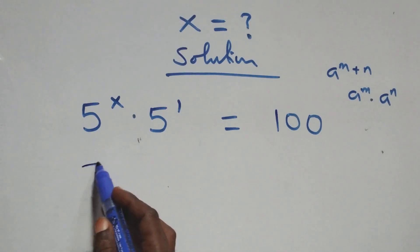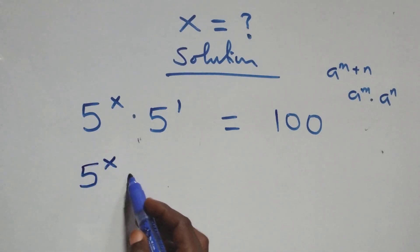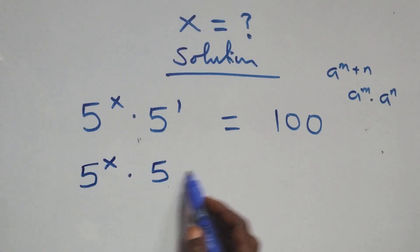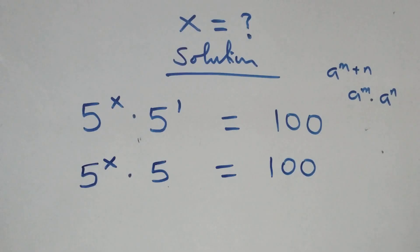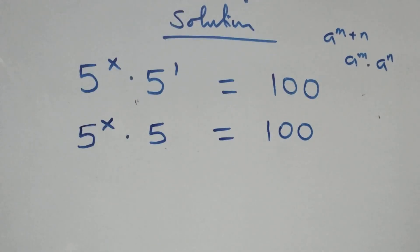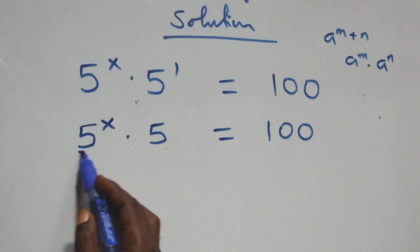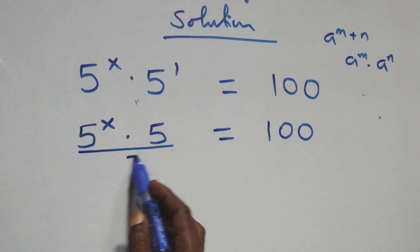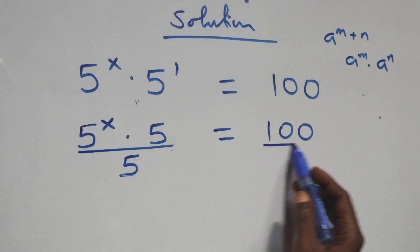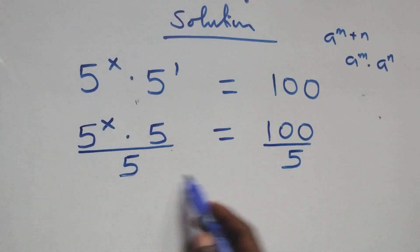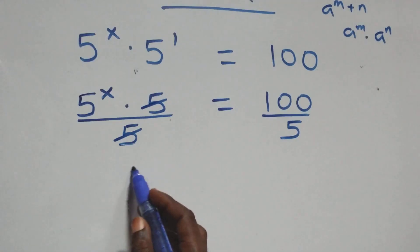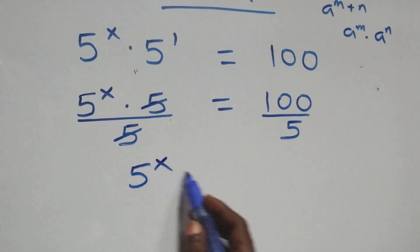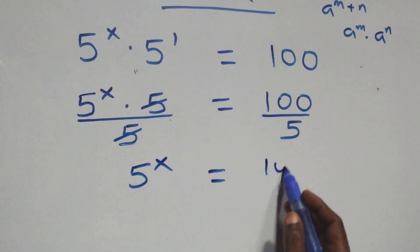This is the same thing as 5 raised to power x times 5 raised to power 1 — that's 5 — equals to the right-hand side. The next step here: divide both sides by 5. Divide this side by 5, also divide this side by 5. Then here, the 5s cancel each other. We have 5 raised to power x equals to the right-hand side over 5.